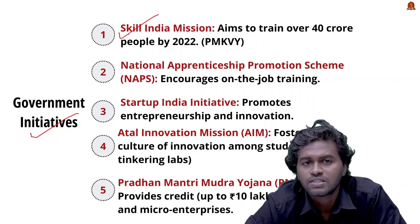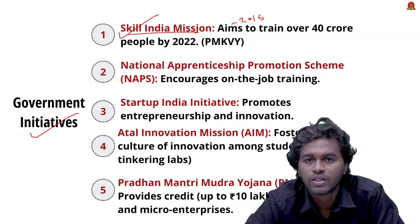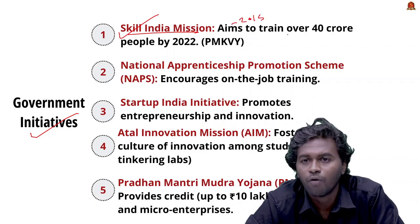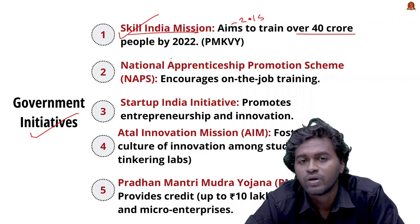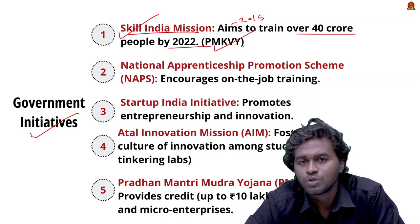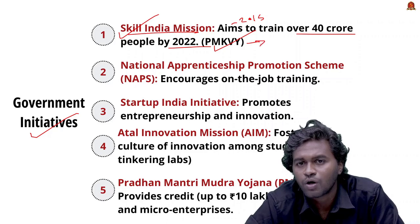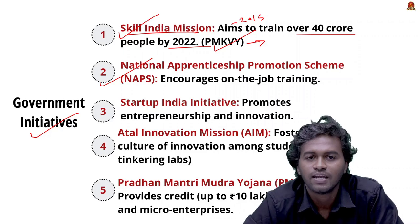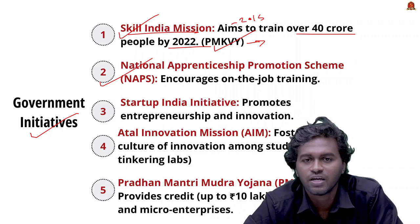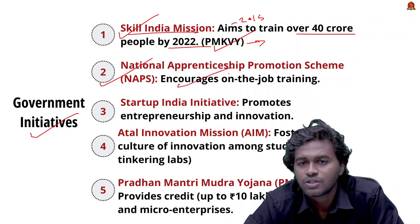Now let's look at government initiatives to utilize the demographic dividend effectively. The first major scheme is the Skill India Mission, launched in 2015 with an aim to train over 40 crore people by 2022. One example is the Pradhan Mantri Kaushal Vikas Yojana, which focuses on providing industry-relevant skills to the youth.